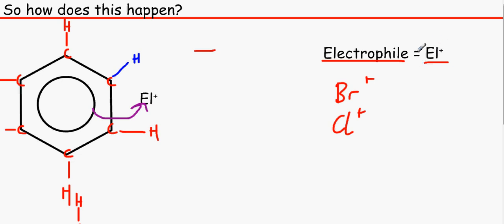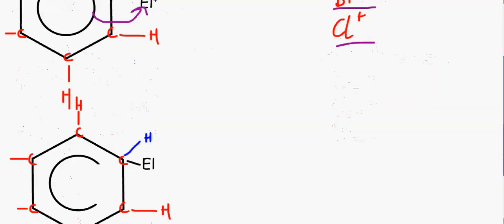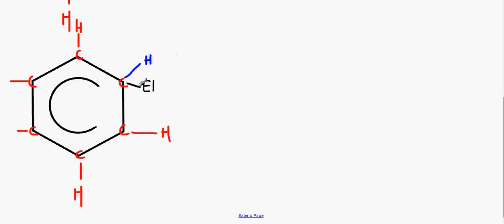Obviously the electrophile, I've just made the EL plus but the electrophiles could be bromine, chlorine, whatever plus. That's just a general way of writing it. So we've transferred an electron over here and we've formed a covalent bond with it.